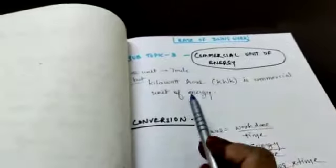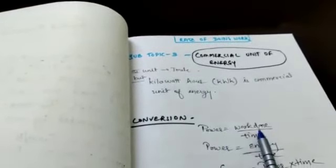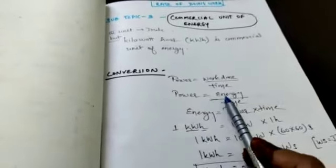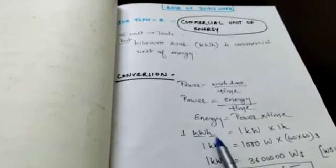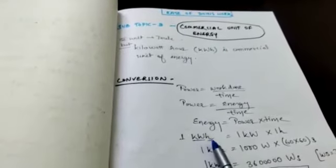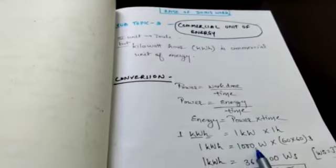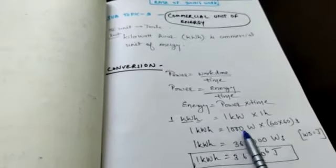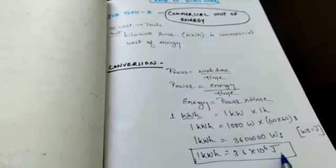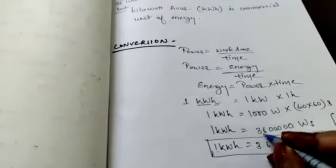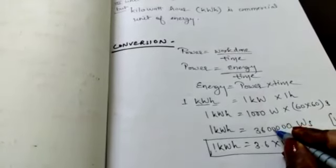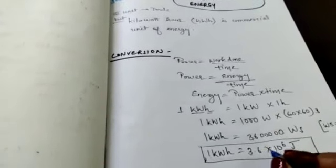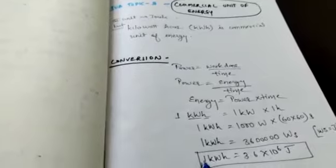Then about conversion. You have to convert Joule to kilowatt hour. So power formula is work upon time. Power is energy upon time also. Energy is power into time. Same energy is power into time. Energy is 1 kilowatt hour. This one is power and this one is time. 1 kilowatt and 1 hour. 1 kilo means 1000 watt. And 1 hour is 60 into 60 seconds. If we solve this, 36 and 3 and 2, 5 zeros. Watt second. Watt second is also known as Joule. We can write Joule. Shift decimal from here to here. So 1, 2, 3, 4, 5, 6 places. So 10 to the power 6. So 3.6 into 10 to the power 6 Joule. This one is 1 kilowatt hour.